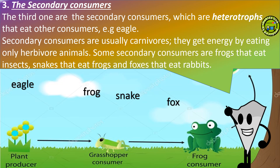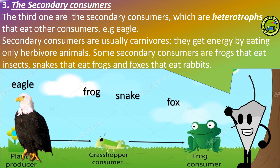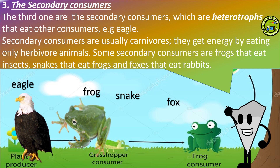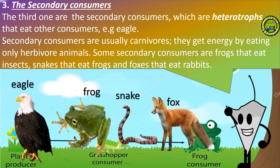Three is the secondary consumers. The third level are the secondary consumers, which are heterotrophs that eat other consumers. Secondary consumers are usually carnivores. They get energy by eating only herbivore animals. Some secondary consumers are frogs that eat insects, snakes that eat frogs, and foxes that eat rabbits.